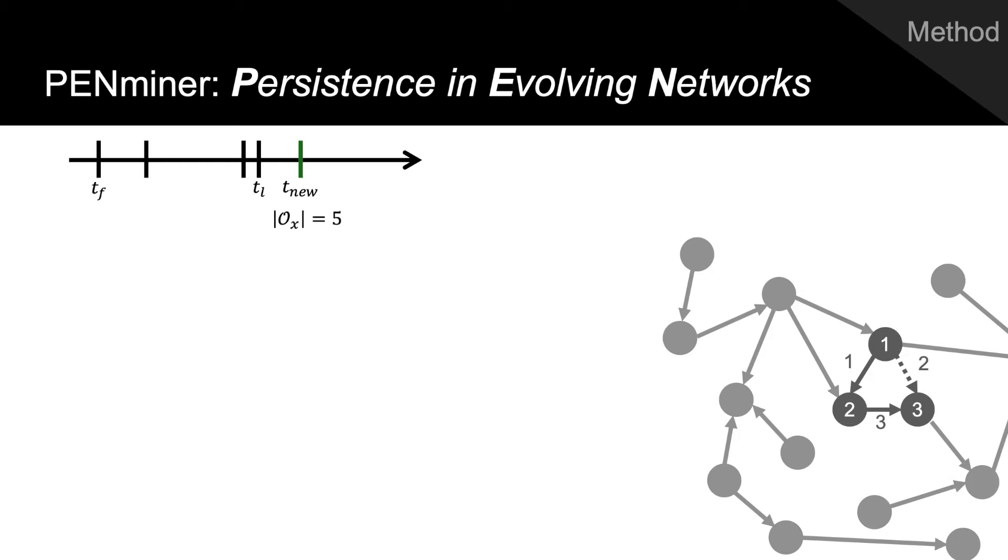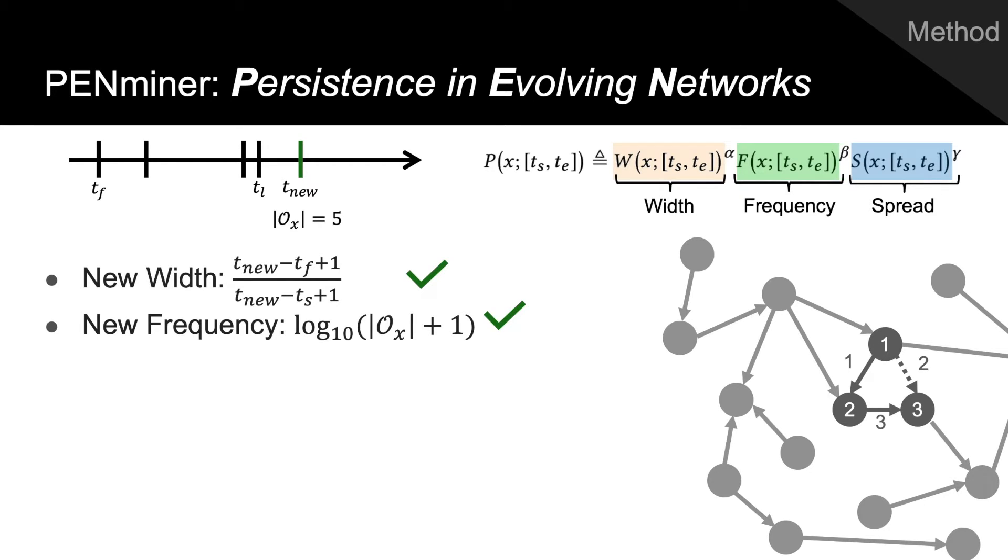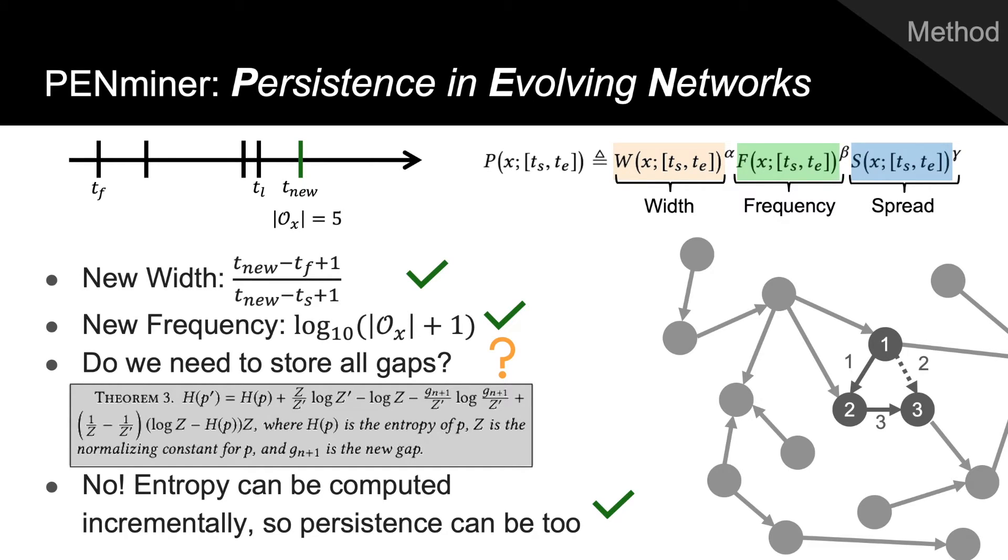When a new snippet arrives in the stream, we need to update its persistence. To do so, we record, in memory, the first and last occurrence of each snippet, as well as the total number of occurrences thus far. This allows the width and frequency terms of persistence to be directly computed. To compute spread, we show that entropy can be computed incrementally, without needing to store all the gaps between occurrences. Since storing persistence already requires a constant amount of memory for each snippet, this theorem means that persistence can be maintained with no additional asymptotic memory overhead and in constant time.